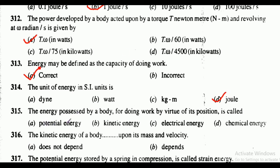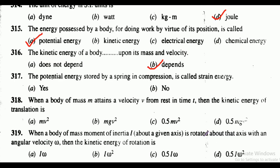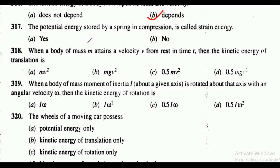Question 315: the energy possessed by a body for doing work by virtue of its position is called — the correct answer is option A, that is potential energy. Question 316: the energy of a body depends or does not depend upon its mass and velocity? The correct answer is option B, that is depends.